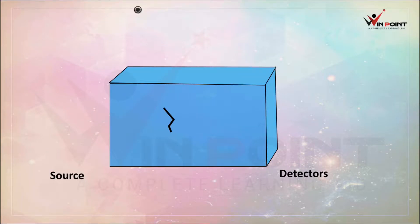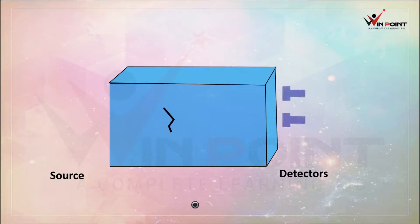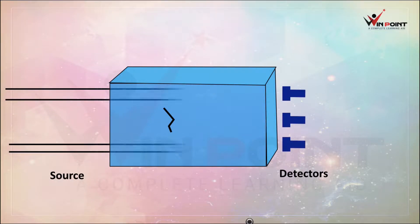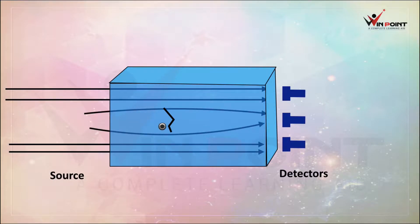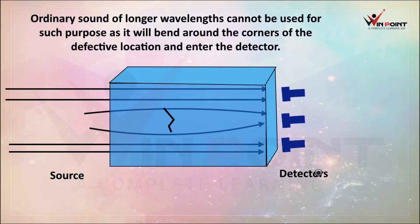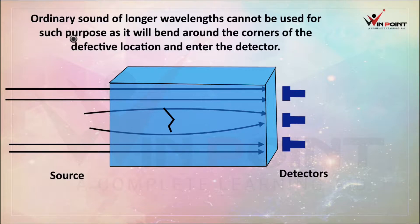Now, if we try to check cracks in a metallic block using ordinary waves — ordinary waves have longer wavelengths. We place detectors and transmit ordinary waves. When ordinary waves pass through the metallic block, if there is a crack, the wave will bend over the crack and still show an indication, so all detectors will work. Because of this reason, we cannot use ordinary waves. Ordinary sound of longer wavelength cannot be used for such a purpose, as it will bend around the corners of the defective location and enter the detector.